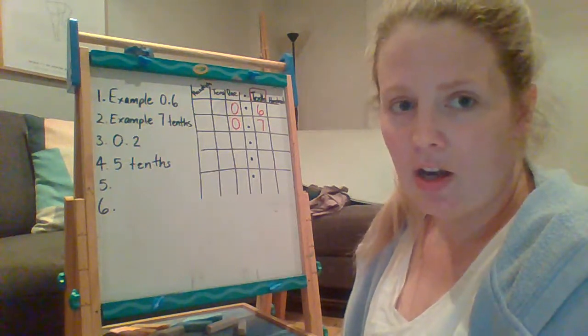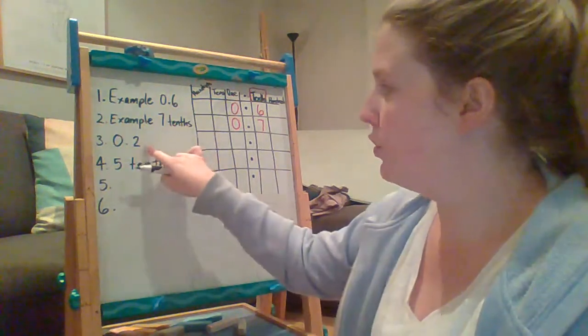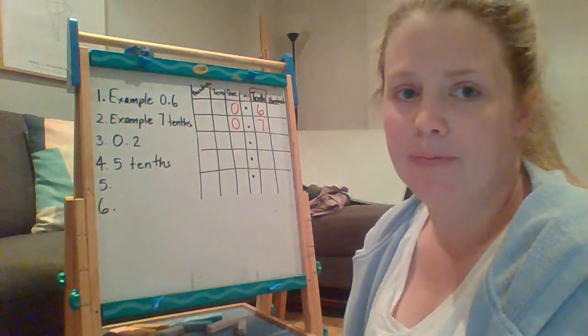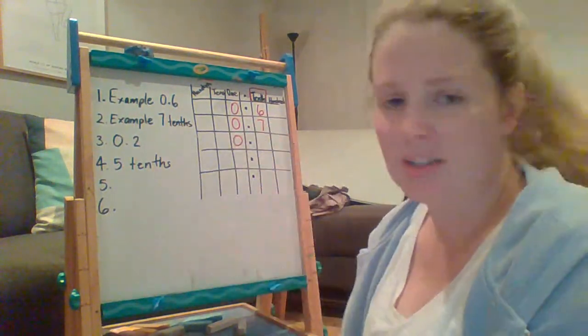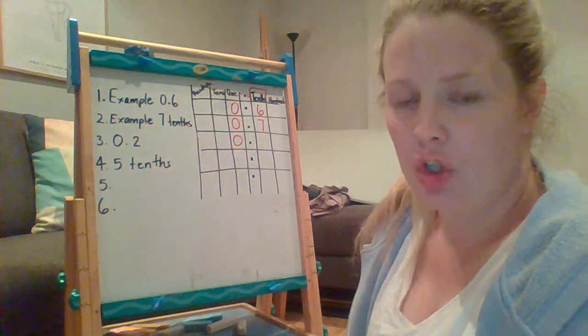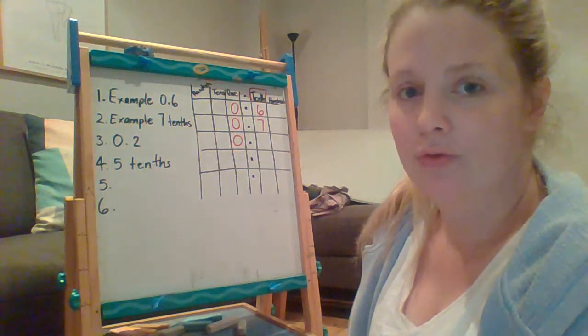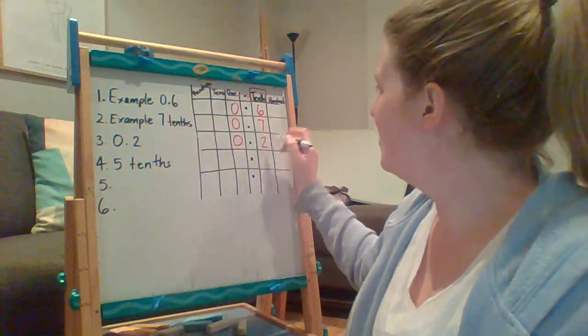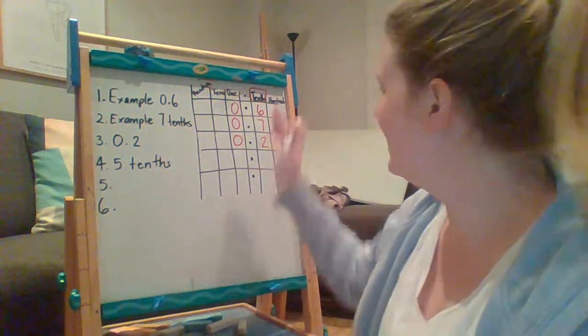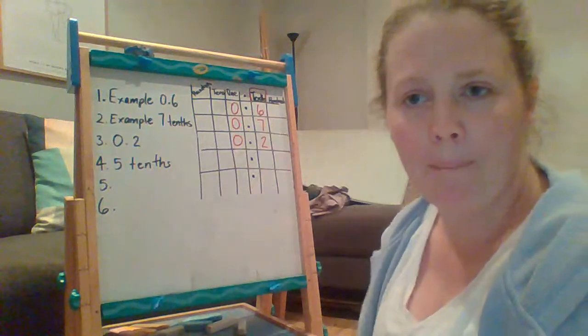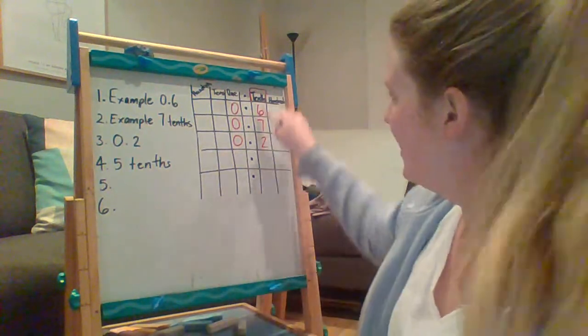Okay, where do you think I would put the zero for two tenths for number three? That's right, the ones column. Where would I put the two? On the other side of the decimal, it's showing me my tenths, my part of a number. It's less than one whole number. That's why it's a tenth.